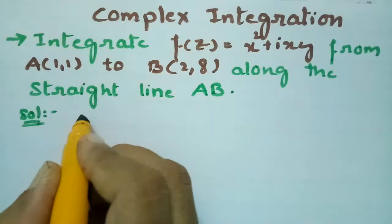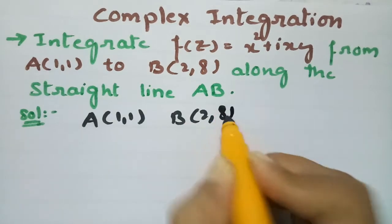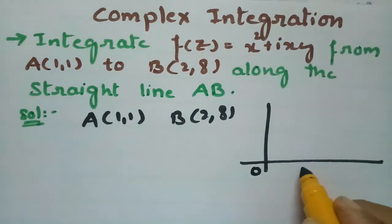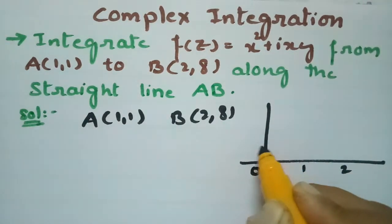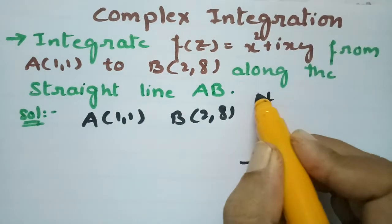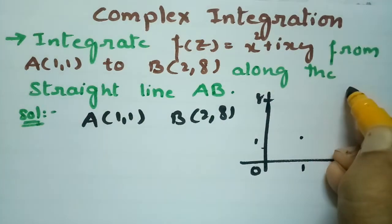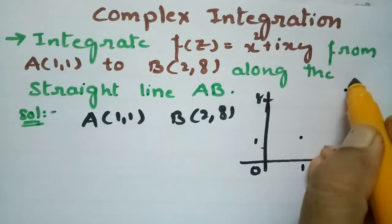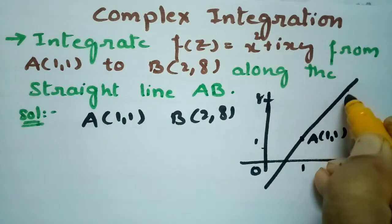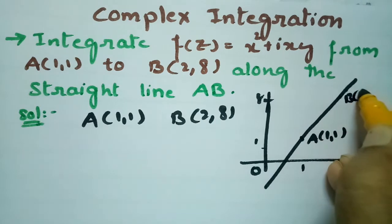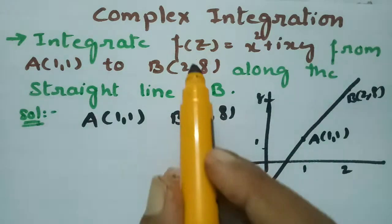So here, point A is given as (1,1) and point B is given as (2,8). On the coordinate axes, this is 1 and 2 on the x-axis, and 1 through 8 on the y-axis. So (1,1) is point A and (2,8) is point B. We have to evaluate f(z) between these two points.